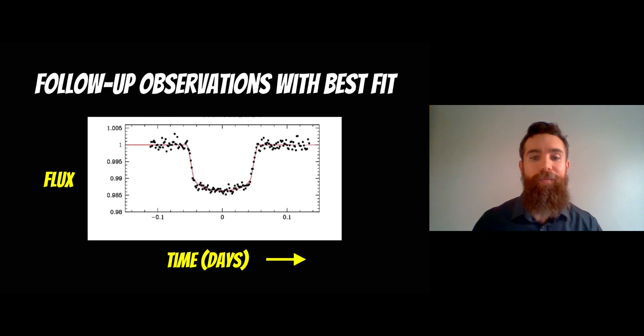It blocked out some of the light, and follow-up observations then gave a much better fit. They used various telescopes to get a better fit of that transit shape, and you can see the amount of flux or the brightness of the star that it's blocking out.